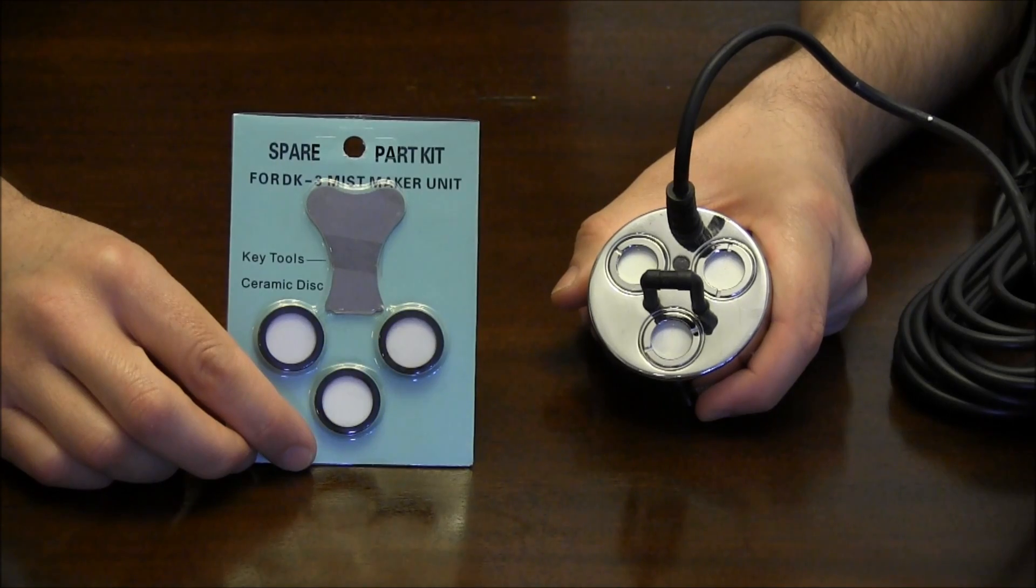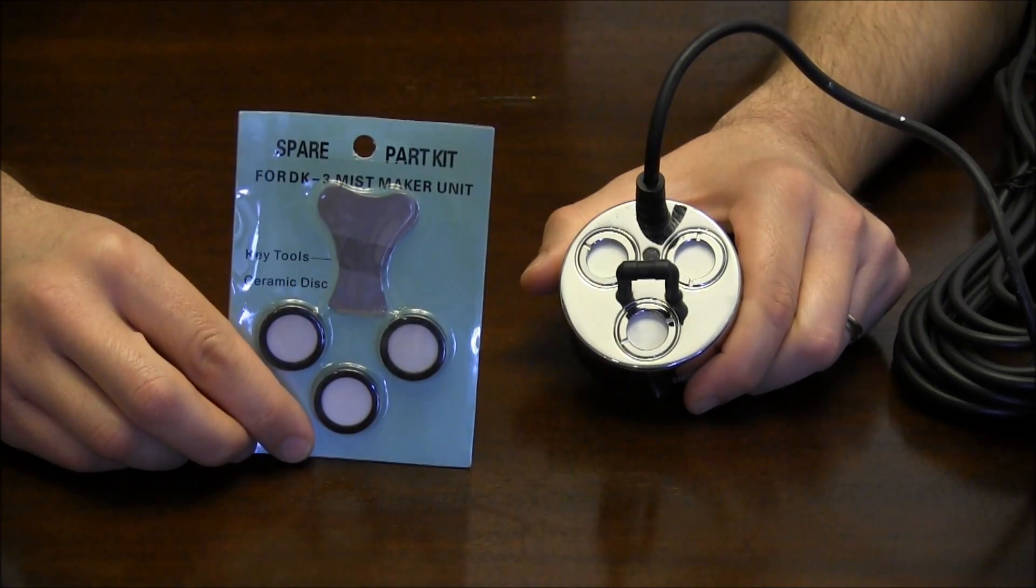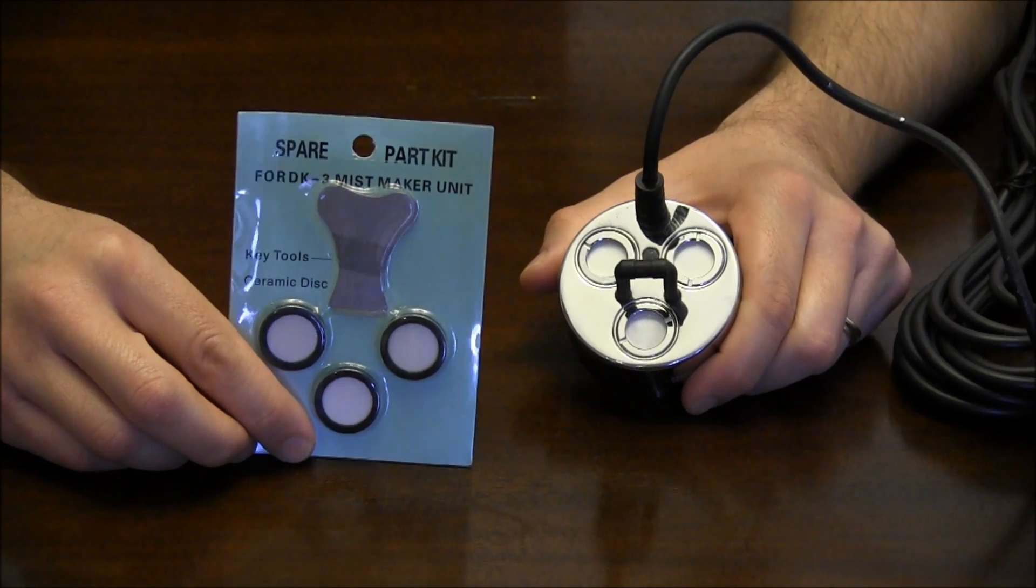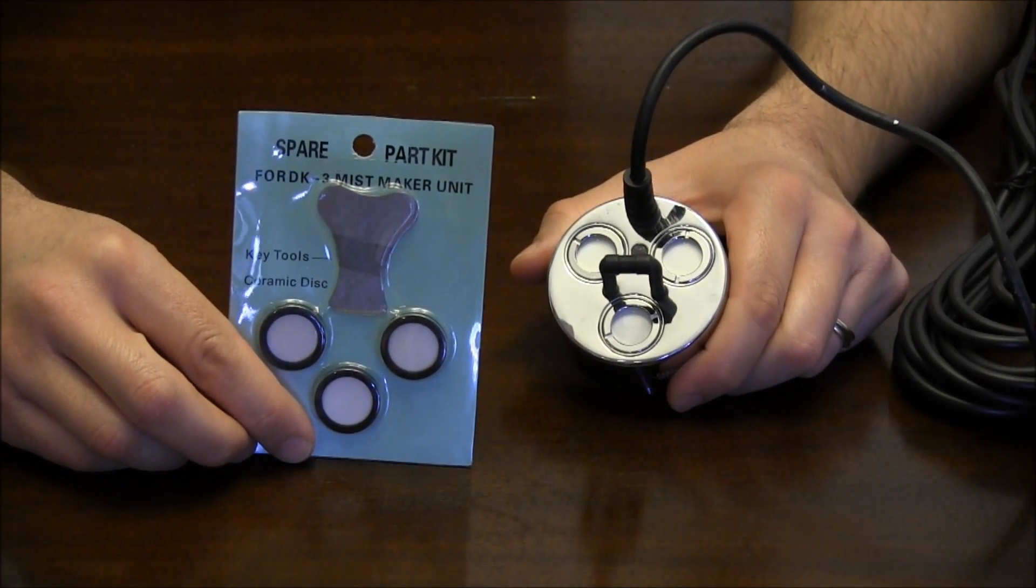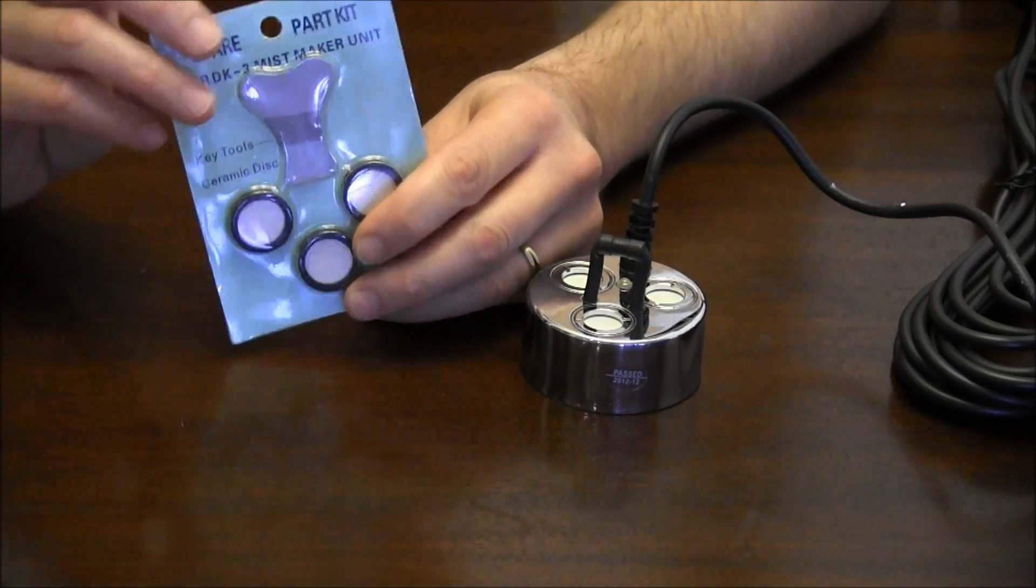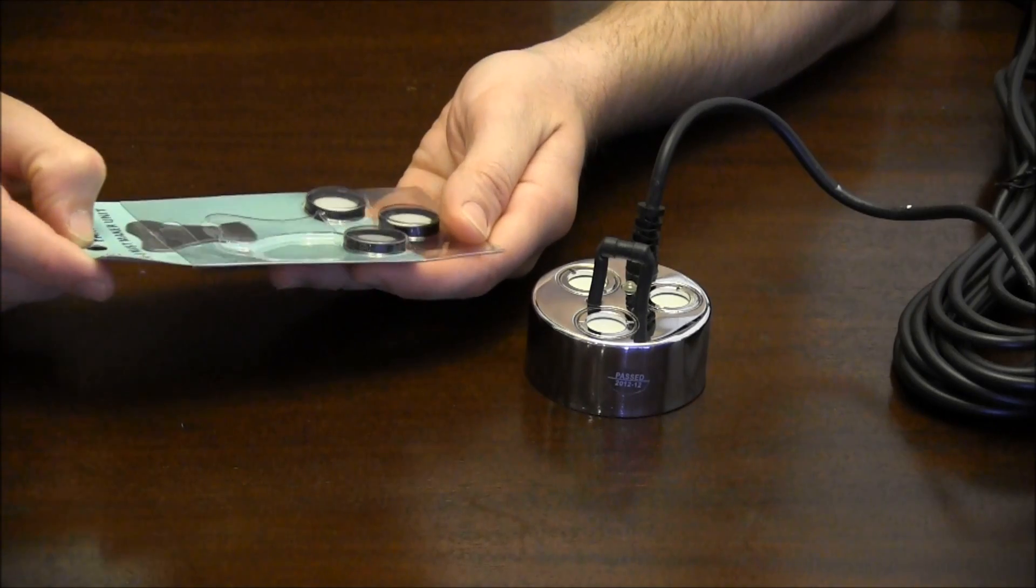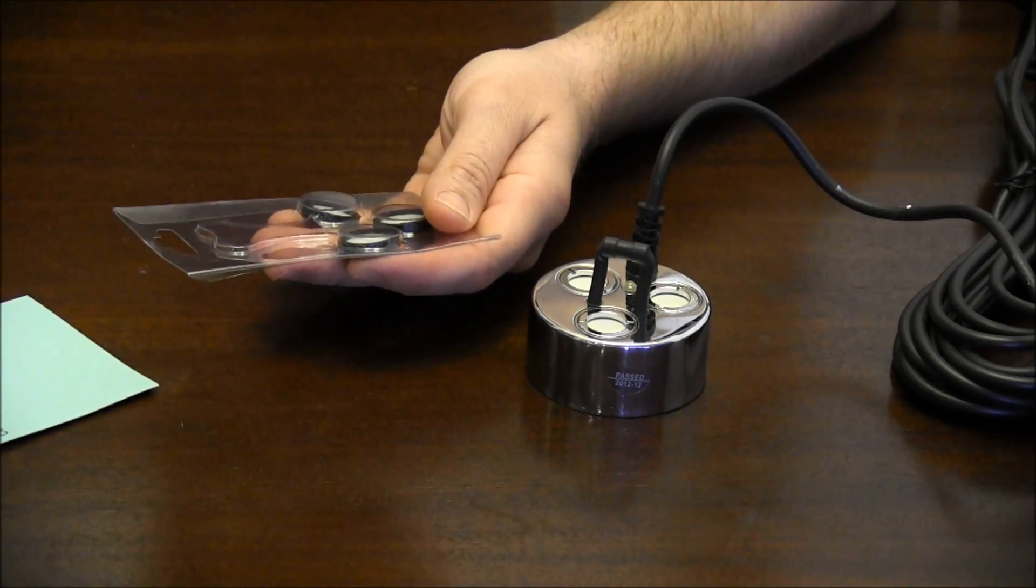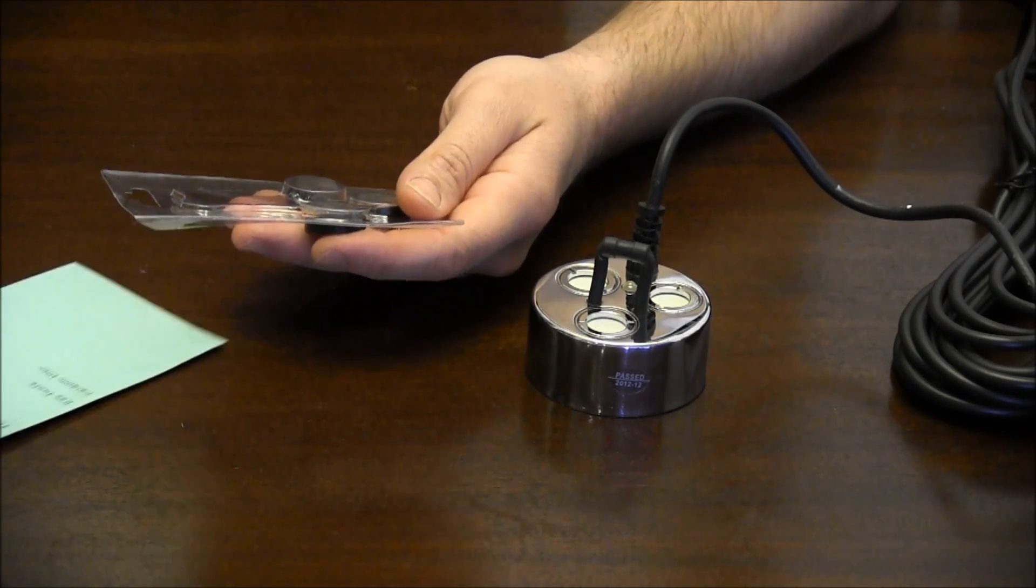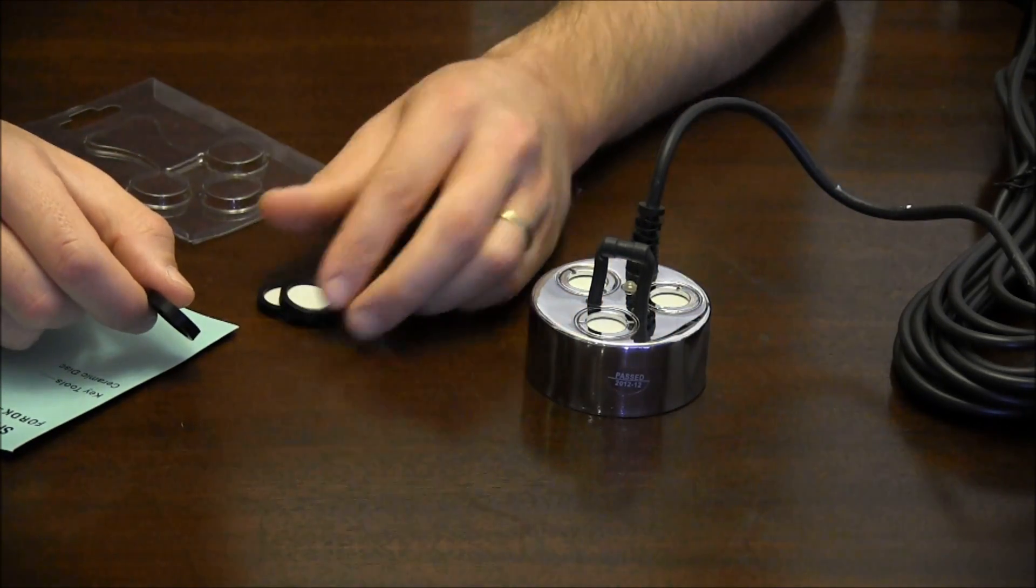Hey guys, John from House of Hydro again. I'm going to show you how to change out the disc in your mist maker and make sure you do it right, because if you screw it up you'll cost yourself some money. You can pick up one of these packs from my website, House of Hydro. These are ceramic discs with a Teflon coating. The disc itself is ceramic and they'll snap easy if you drop them on the floor.